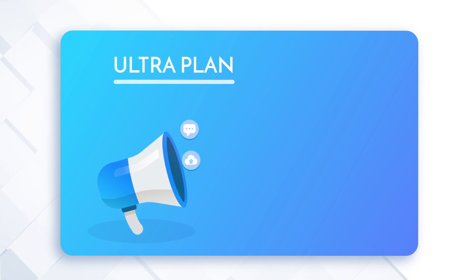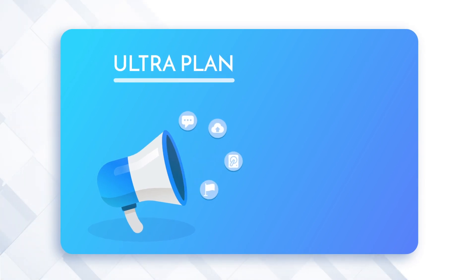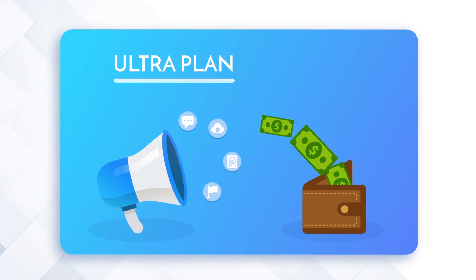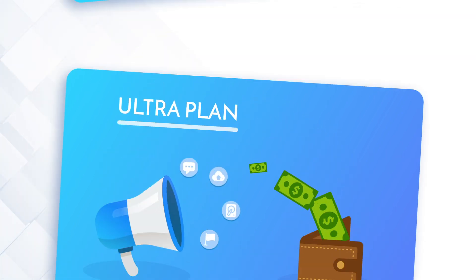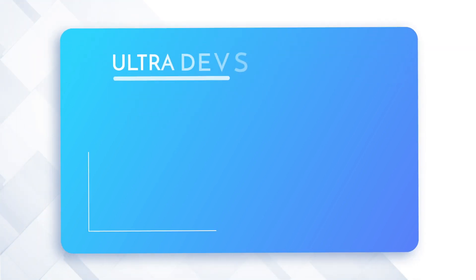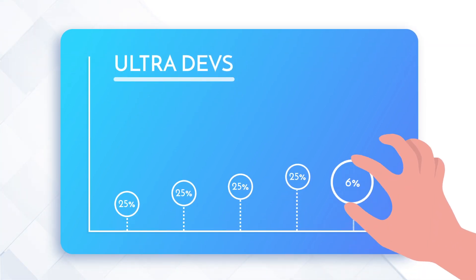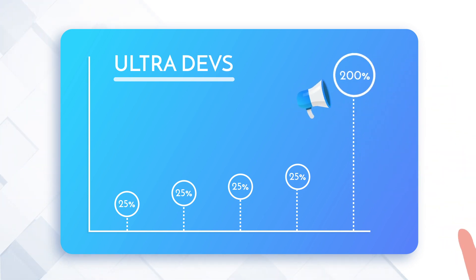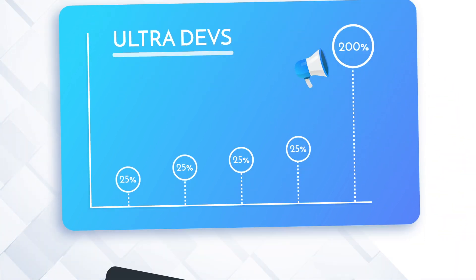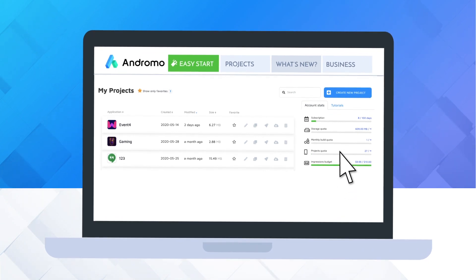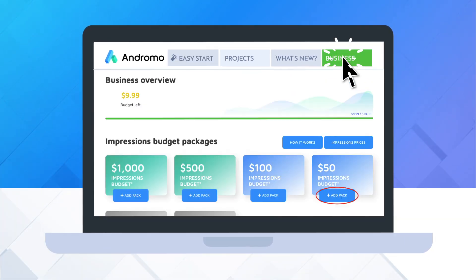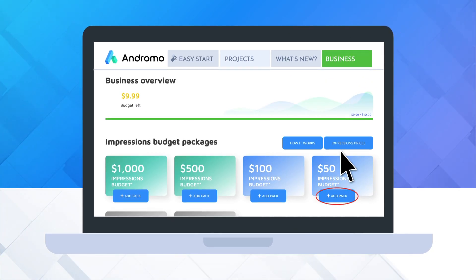Ultra will allow you to promote your app through advertising and pay back your investment. Practice shows that Ultra developers increase their revenue by at least 25%, and growth reaches 200% with competent promotion of the app. You will also need to book impressions for interstitial ads in the Ultra Plan — a small maintenance commission.